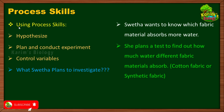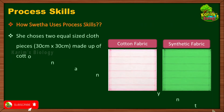Sweta is going to use three process skills: hypothesis, planning and conducting an experiment, and controlling the variables. In the first step she plans a test to find out how much water different fabric materials absorb. She wants to make a comparison between cotton fabric and synthetic fabric — which one absorbs more water and which absorbs less.